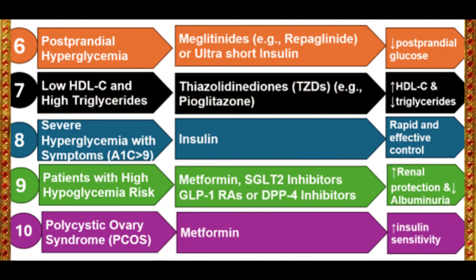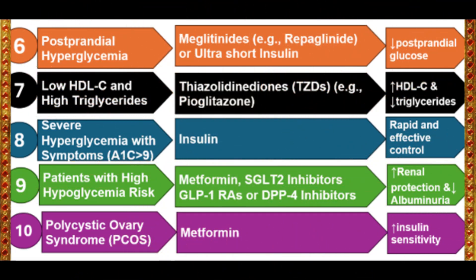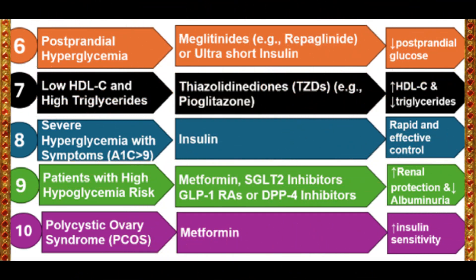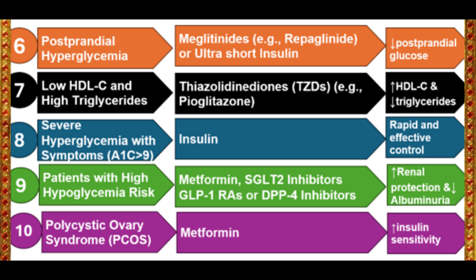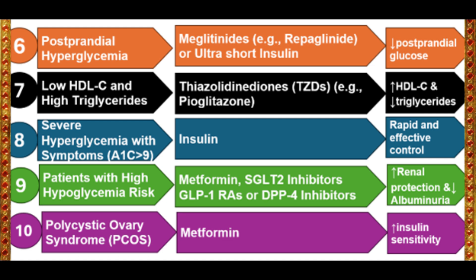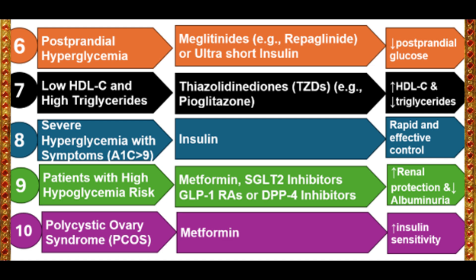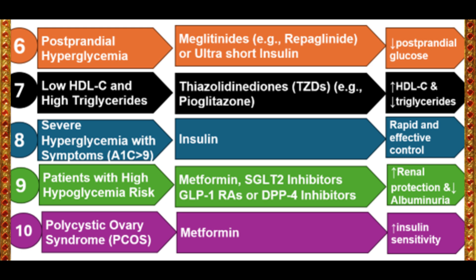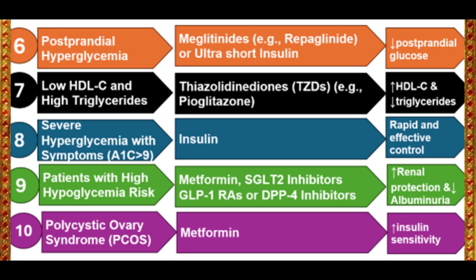Case 8 – Severe Hyperglycemia with Symptoms. Insulin is the drug of choice. It provides rapid and effective glycemic control, especially in acute settings.